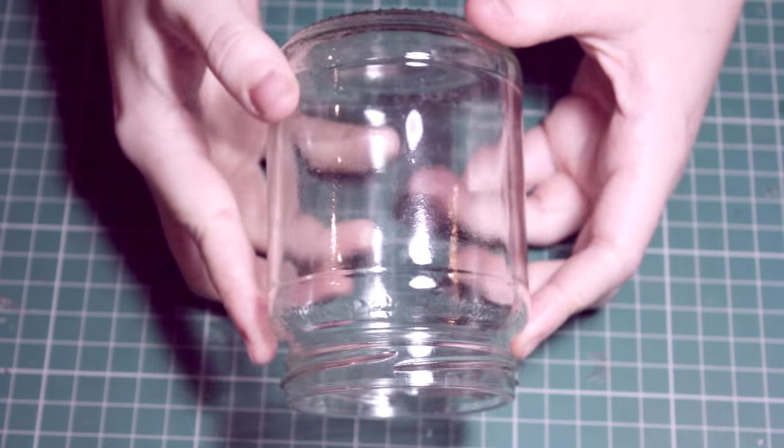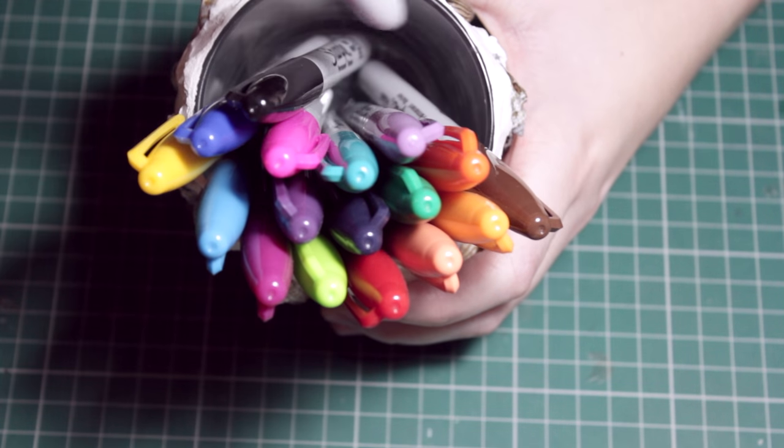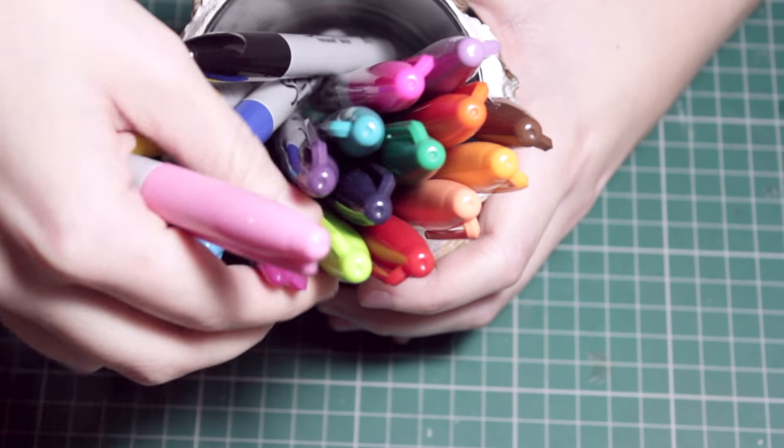Let's start off with what you're going to need. I'm going to be using an old honey jar which obviously I've cleaned, and then I'm going to be using some different permanent markers.